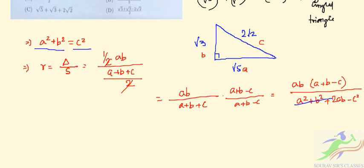So we will have only a plus b minus c by 2, where a is given as root 5 plus b is root 3 minus c is 2 root 2, by 2.